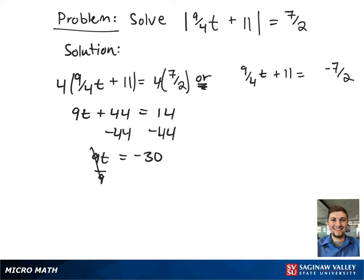Next, to get t by itself, we divide both sides by 9, and then after reducing, this gives t equals negative 10 thirds.